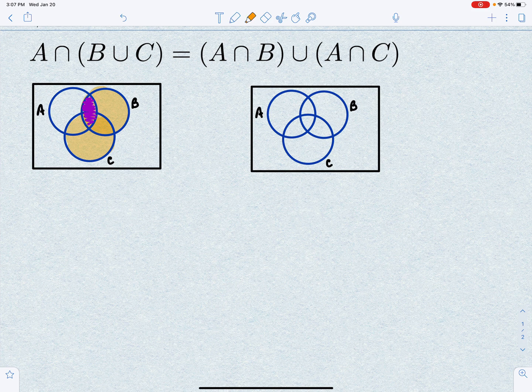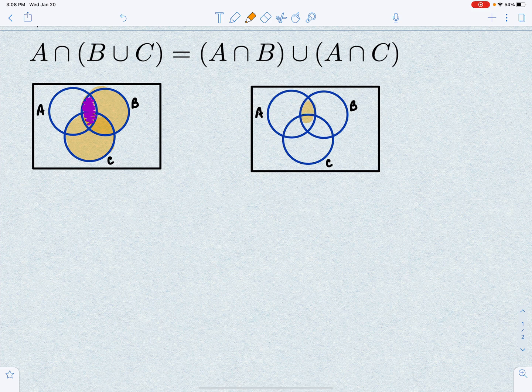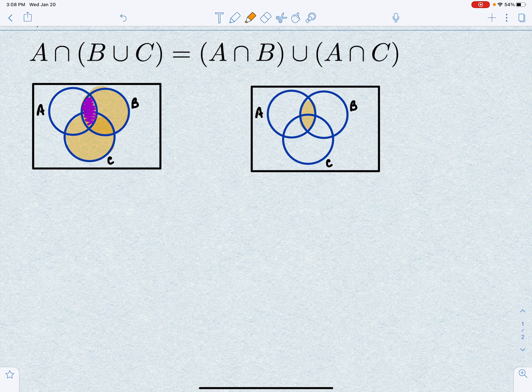Now coming over here, A intersect B would be this right here. And A intersect C. Oh, I missed a piece over here. It would also be this.